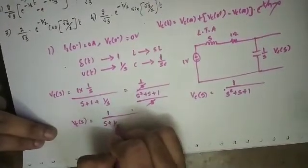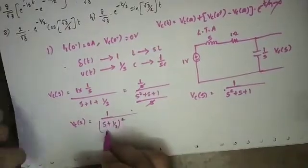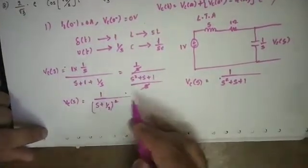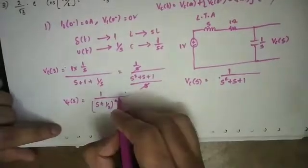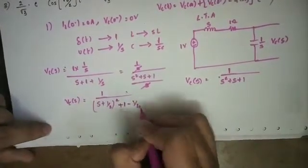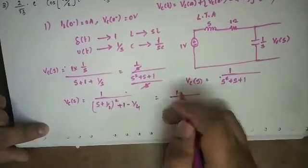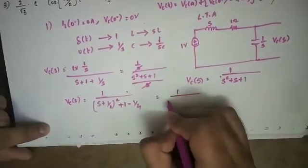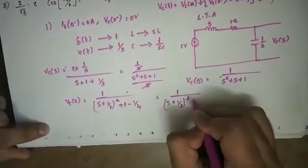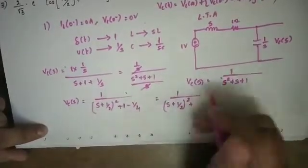Let's complete the square: write (s + 1/2)² = s² + s + 1/4. So s² + s + 1 = (s + 1/2)² + 1 - 1/4 = (s + 1/2)² + 3/4. So the denominator becomes (s + 1/2)² + (√3/2)².